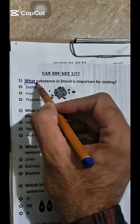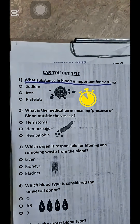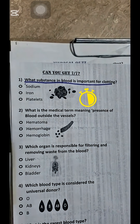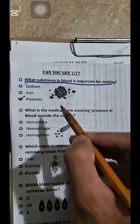What substance in blood is important for clotting? Platelets.